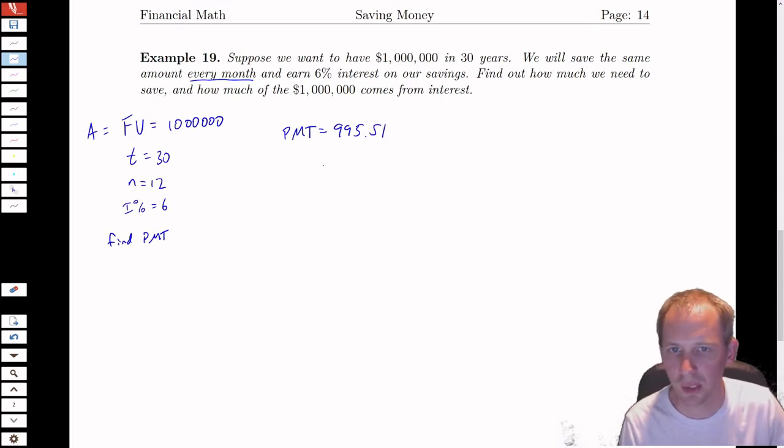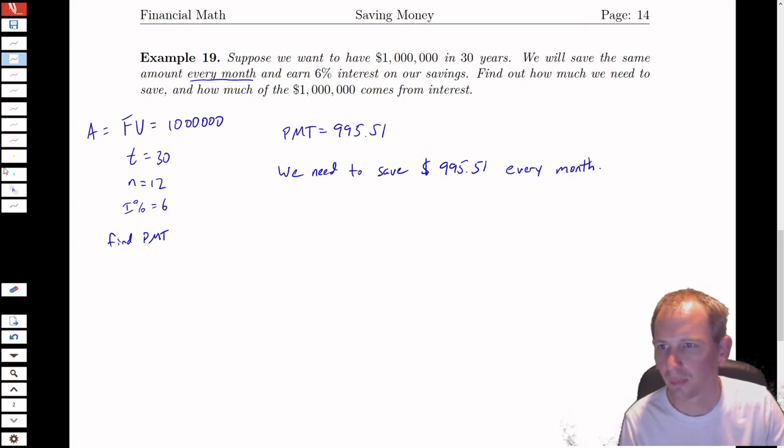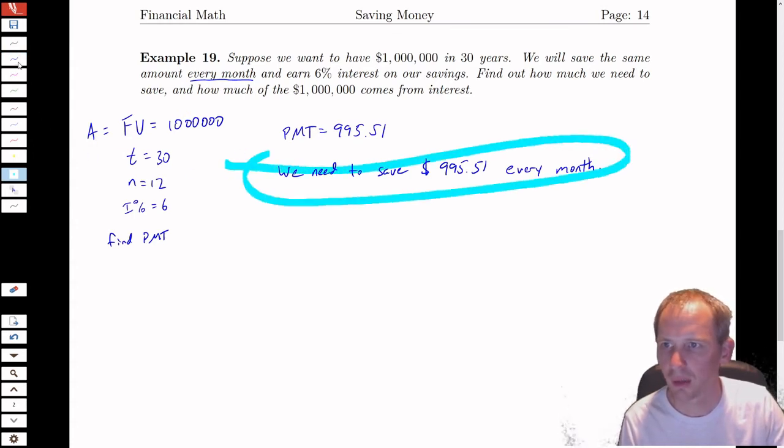So we need to save $995.51 every month. The next part, find out how much we need to save, check. How much of the million dollars comes from interest?